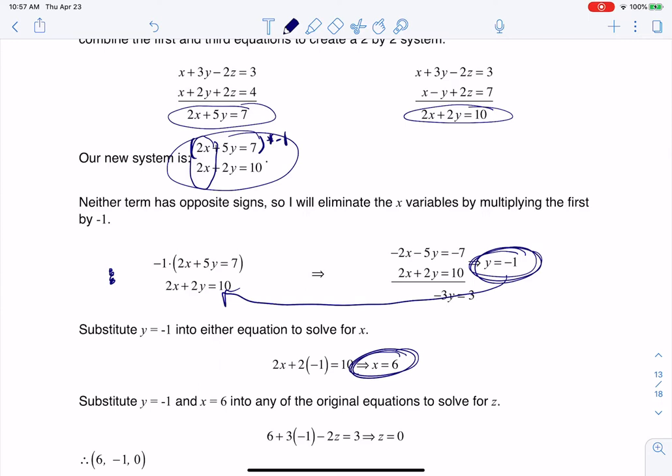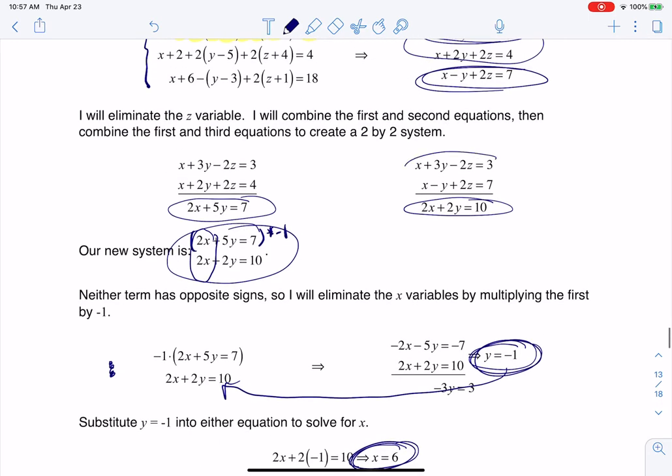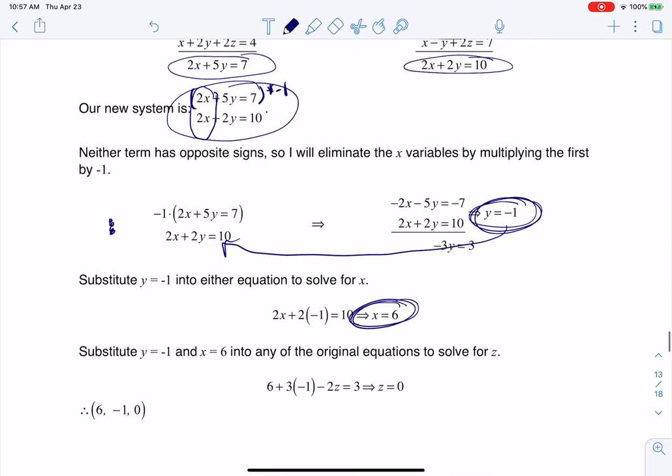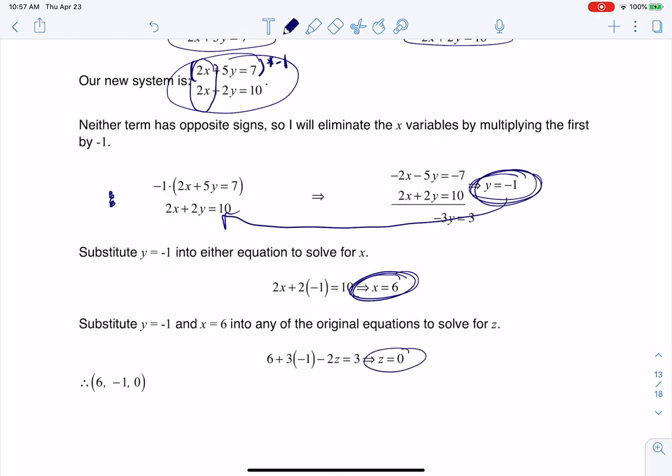And then I'm going to take both the x equaling 6 and the y equaling negative 1 and plug it back into one of the original equations, and I'm just going to opt to pick this one. It doesn't matter which one you pick. And then you wind up finding out z equals 0, and there's my ordered triple. Thanks so much, everyone.